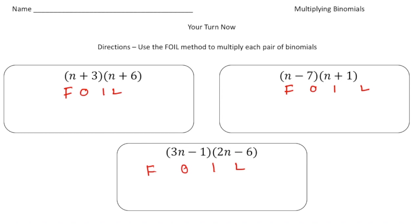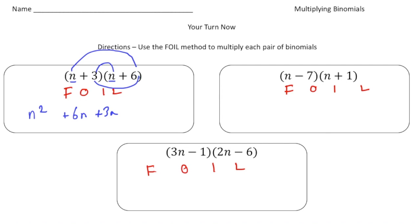Welcome back. Let's see how you did with these practice problems. The first one: (N + 3) times (N + 6). First: N times N is N squared. Outside: 6 times N is 6N. Inside: 3 times N is 3N. Last: 3 times 6 is 18. So it's N squared plus 9N plus 18.